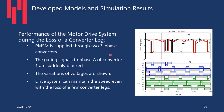Here's an example of performance of the motor drive system during loss of a converter leg. The PMSM — permanent magnet synchronous machine — is supplied through two three-phase converters. During the fault, the gating signal to phase A of converter one is suddenly blocked. You can see the variation of the voltage. One thing I will show during the simulation is that even when you lose legs or phases, the drive system can still maintain speed.